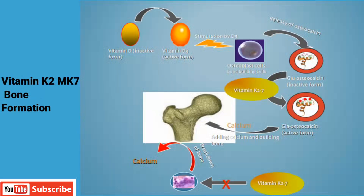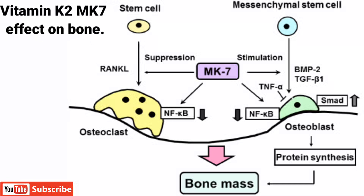Vitamin K2 MK7 is very important for bone formation. Osteoblasts release a protein called osteocalcin, which is converted into its active form via Vitamin K2 MK7. This active osteocalcin attaches calcium and deposits it in the bones. Vitamin K2 MK7 also stimulates osteoblasts and inhibits osteoclasts. It inhibits nuclear factor Kappa-B, responsible for cytokine production, thereby preventing TNF-alpha from inhibiting osteoblasts.